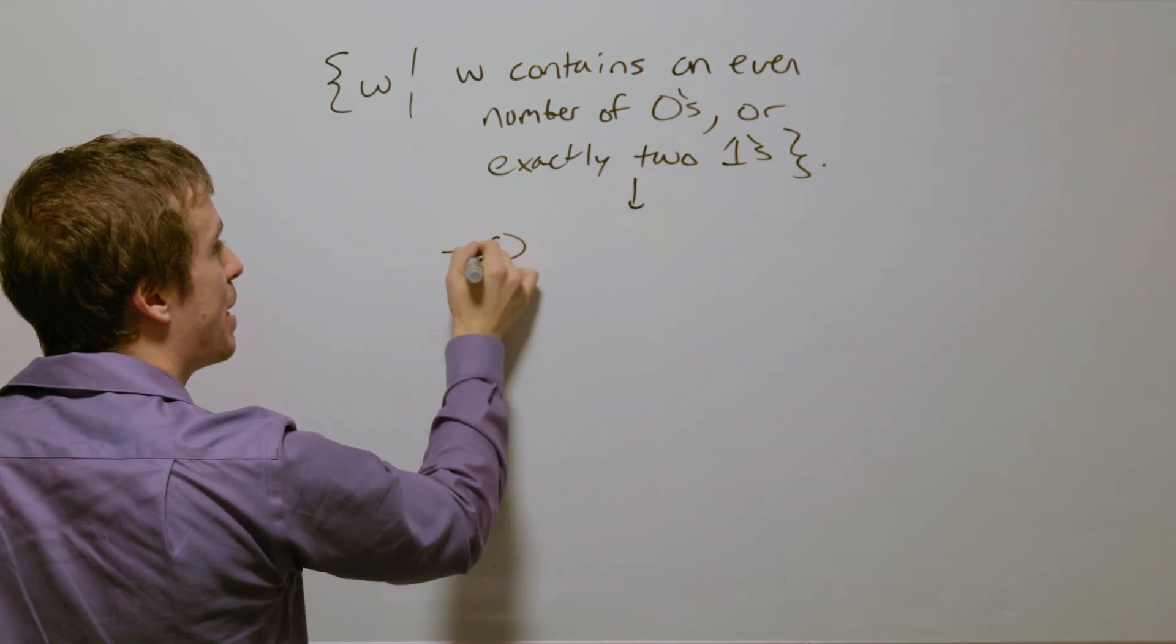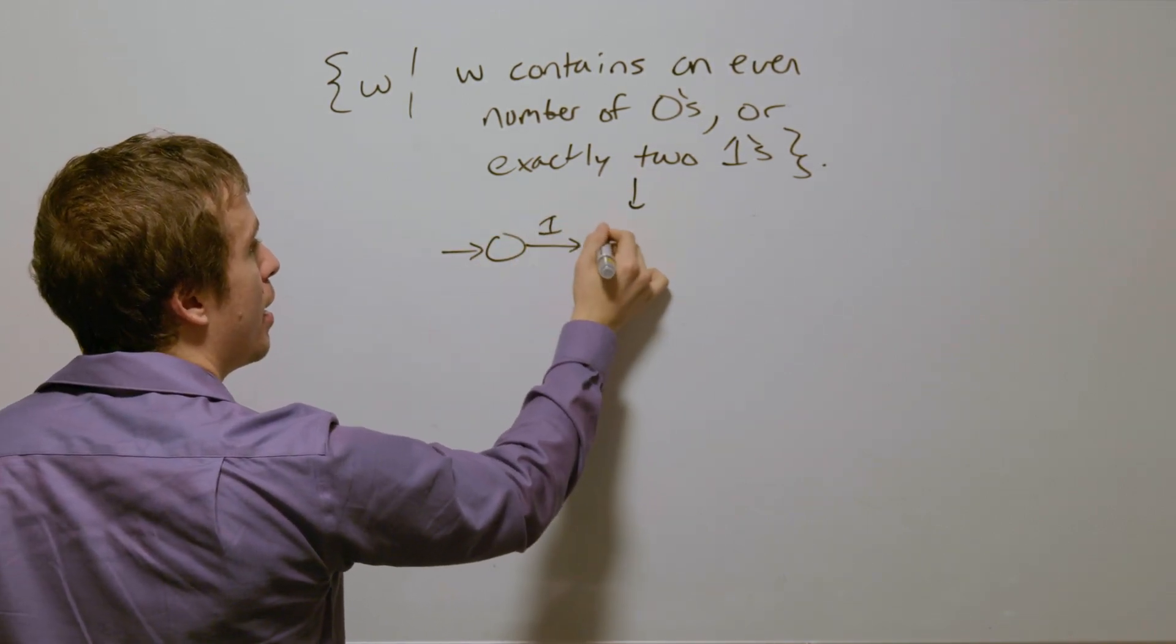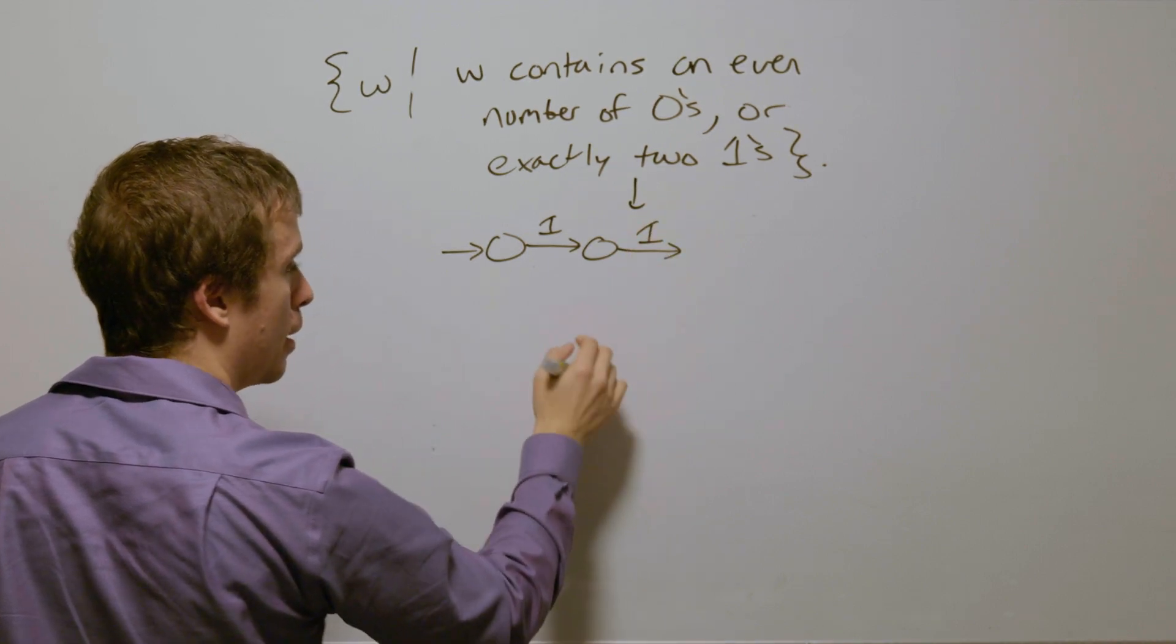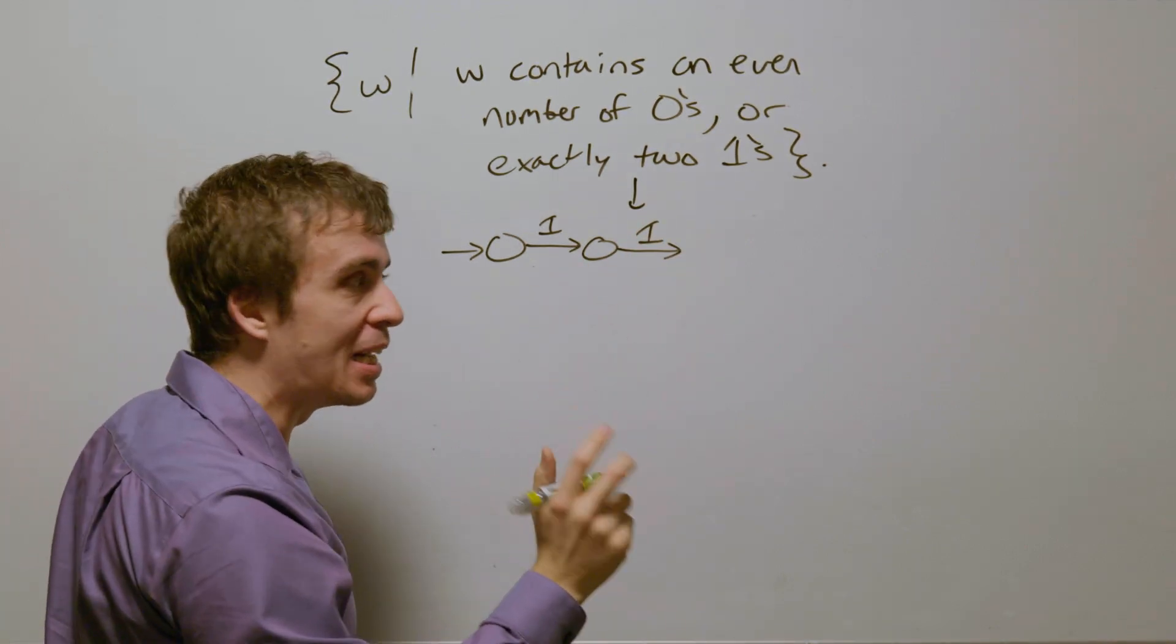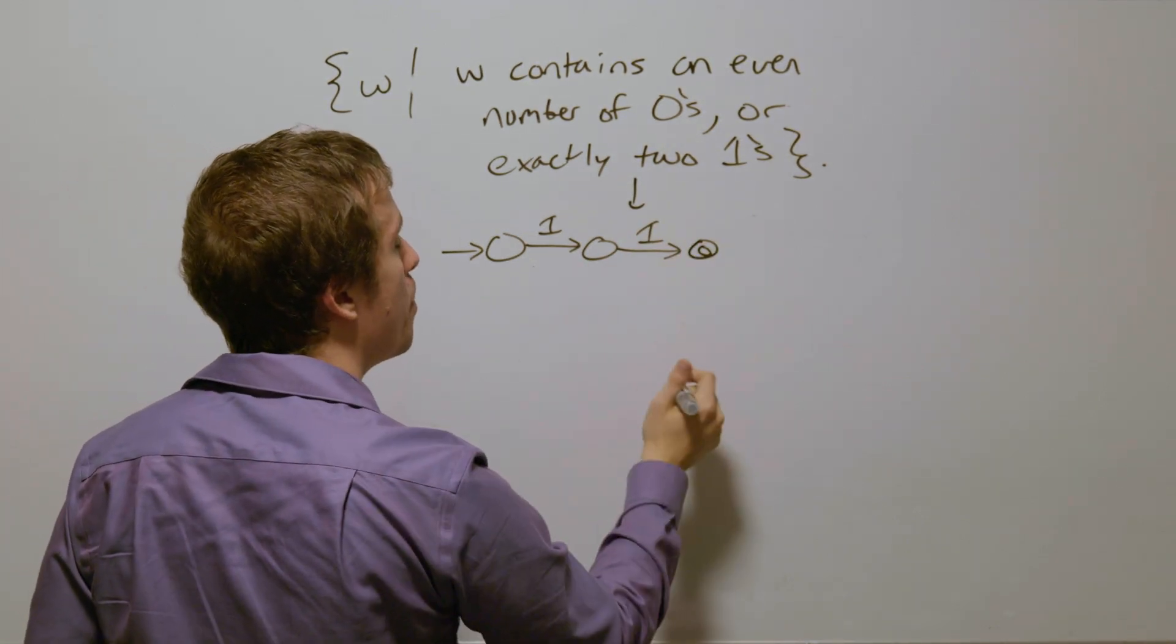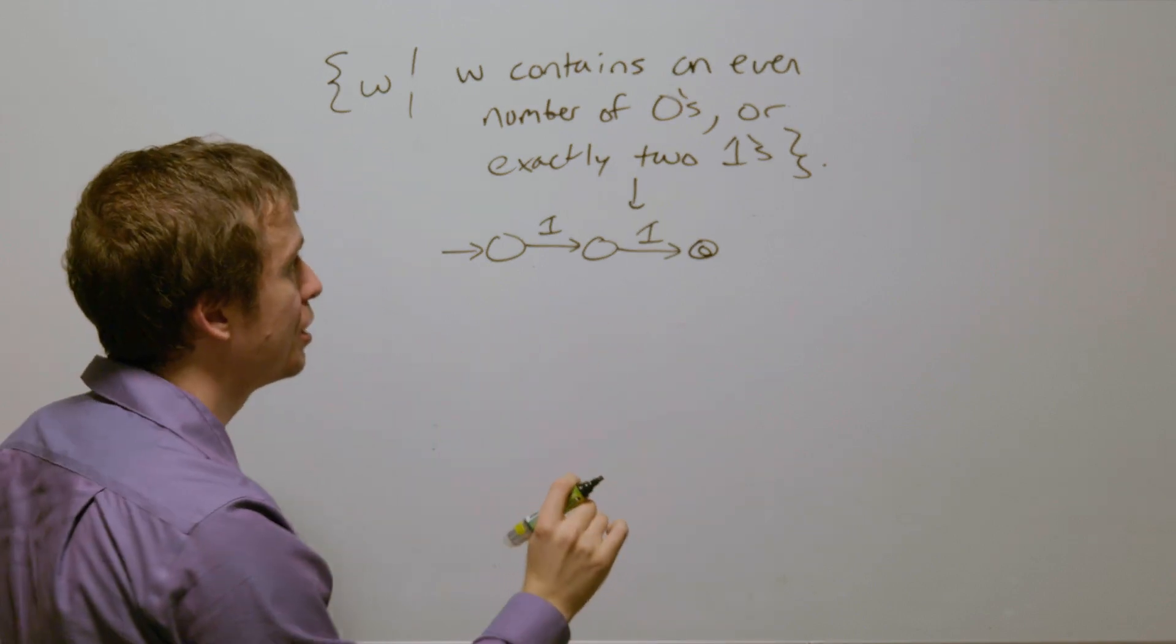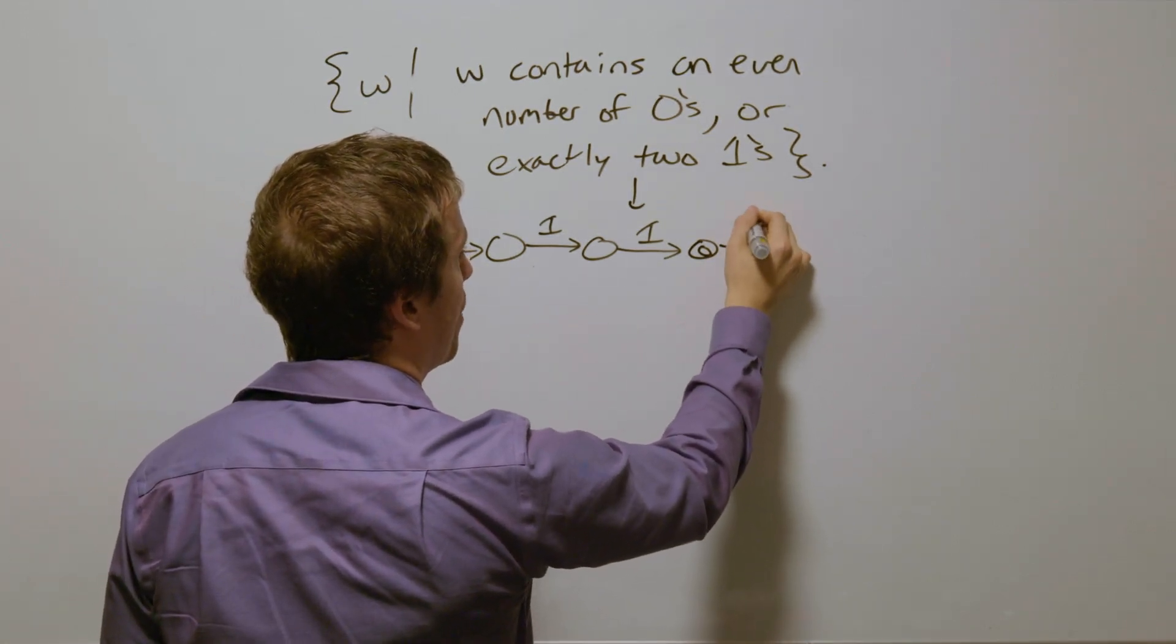Let's do the exactly two ones first. So that's going to be, I need to read a one, and then read another one, and at that point, we need to accept. But if we read anything else, any other ones, we should not accept,